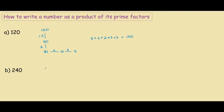So for example, for 240, we can go through the same process to work out the prime factors, but a quicker way is to realize that 240 is just 120 times 2. So if 120 times 2 equals 240, and this 2 is a prime factor, and we already know the prime factors for 120, we can say the prime factors for 240 are 2 times 2 times 2 times 2 times 3 times 5, so this gives us 240.